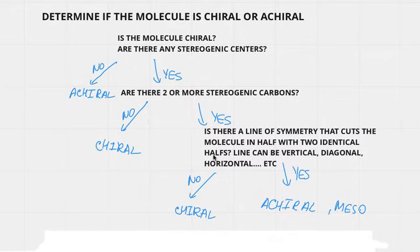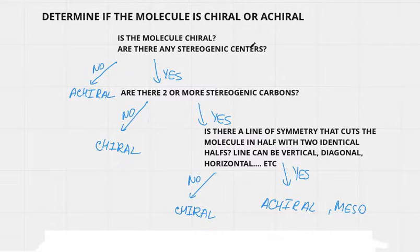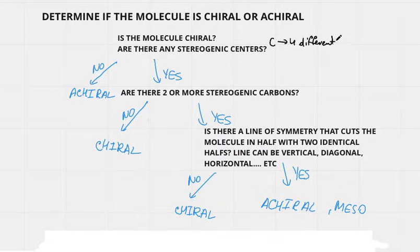In this video we will learn how to figure out if a molecule is chiral or achiral, and we will use a chart to do so. The first question we ask ourselves is: are there any stereogenic centers? There are multiple names for these — they're also called chiral centers, stereogenic carbons, or chiral carbons. Basically, it's a carbon connected to four different groups.